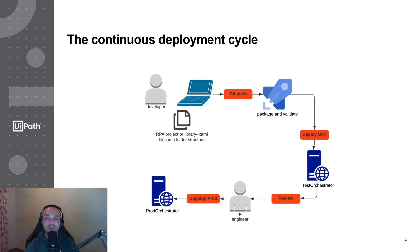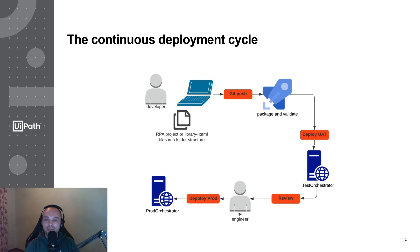The deployment cycle looks like this: an RPA developer works on his laptop, creates some source code — in UiPath's case a set of XAML files, maybe some screenshots as well. He's happy with his work, does a git commit, does a git push, and then kicks back while the pipeline takes care of the rest. This git push triggers a pipeline which first validates that the code is valid, checks for errors, ensures it adheres to organization constraints like naming conventions for variables and files, and then the code gets packaged.